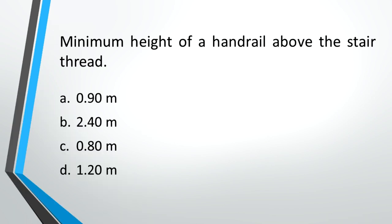Minimum height of a handrail above the stair thread. A: 0.90 meter, B: 2.40 meters, C: 0.80 meter, D: 1.20 meters. Answer: C, 0.80 meter.